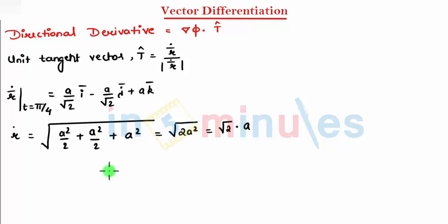Now I can write t cap. Let's substitute here. I am substituting values, so t cap is r bar, a divided by √2 i bar minus a divided by √2 j bar plus a k bar.